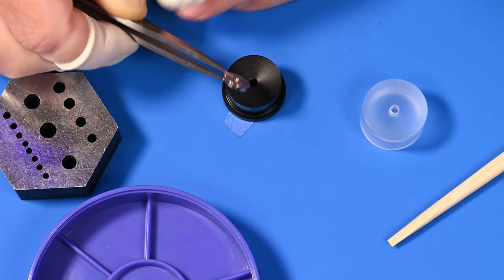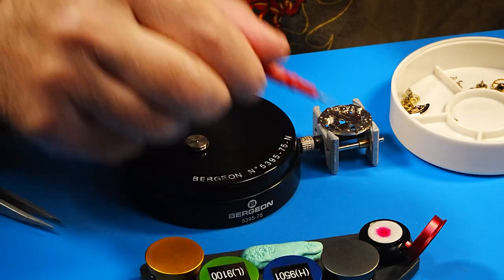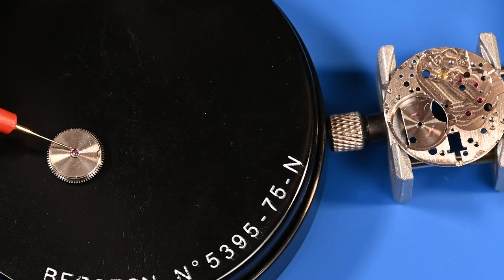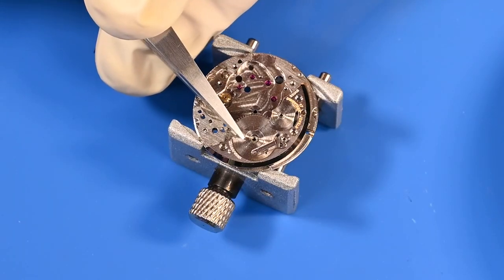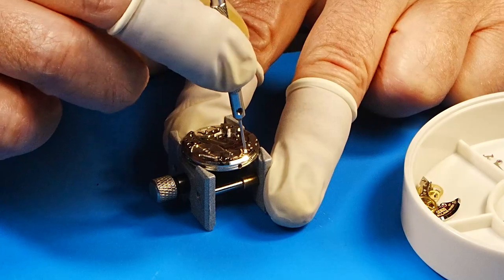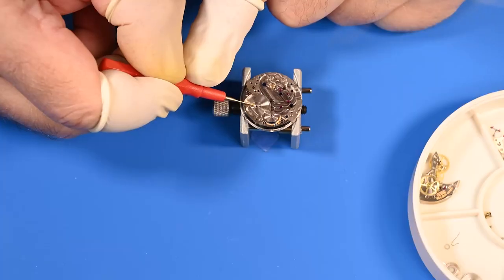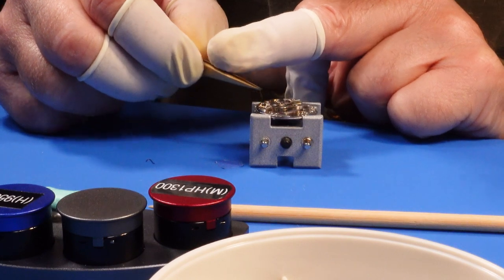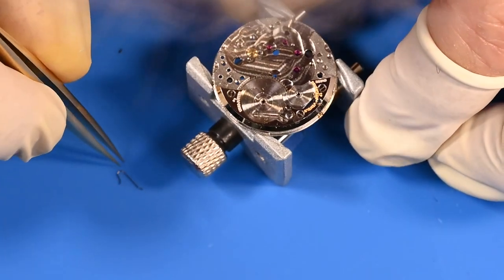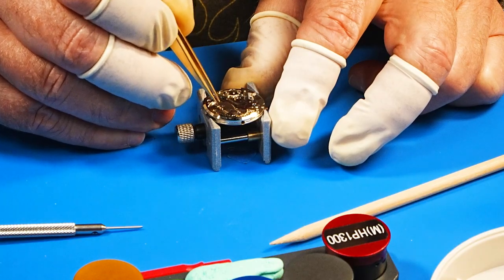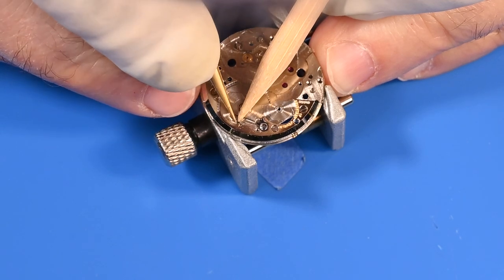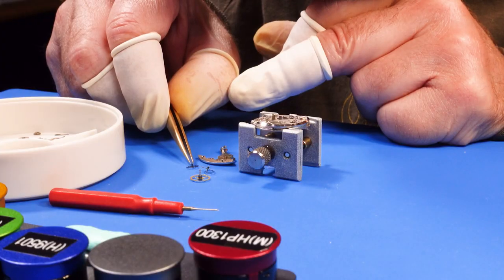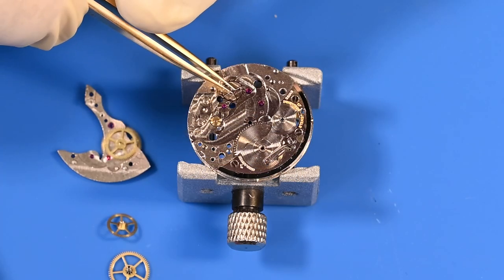All right, it is time to start reassembling the watch. I'll be lubricating as I go and let's start by getting the barrel in place. The barrel gets covered by the barrel bridge. A little bit more lubrication. And now we can put the click in place. I'll put the click in place lightly and then install the click spring. And once the spring is in place, I'll tighten everything down.